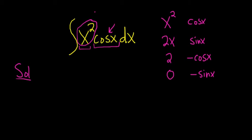So again, when you're using tabular, you just write down the piece that you're going to differentiate, and you just take derivatives. And then you write down the piece that you're going to integrate, and you just integrate. Then you always start with plus. So plus, minus, plus, minus. And then you just draw arrows.